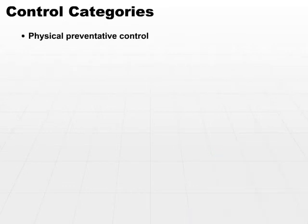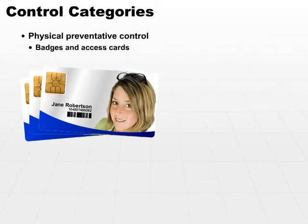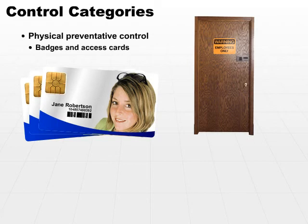So an example of a physical preventative control might be a badge or an access card. We need a badge to swipe in order to get into or gain access to a secure room. If we do not satisfy the requirements by using our badge or our access card, we are not going to be able to physically access the room — hence the term physical preventative control.